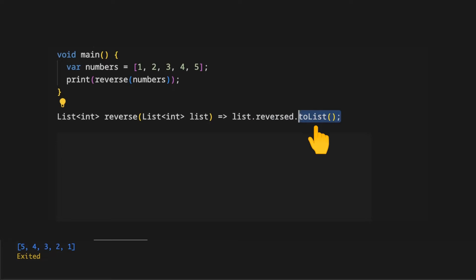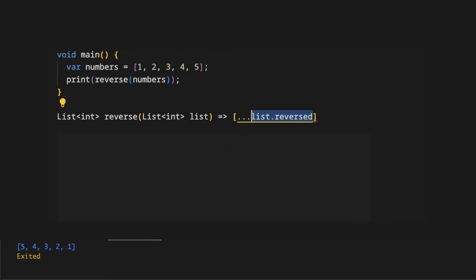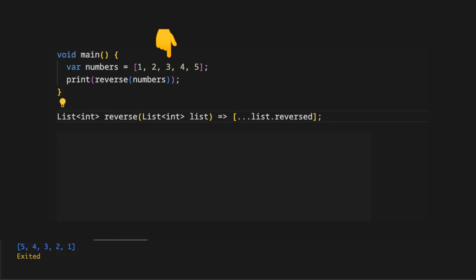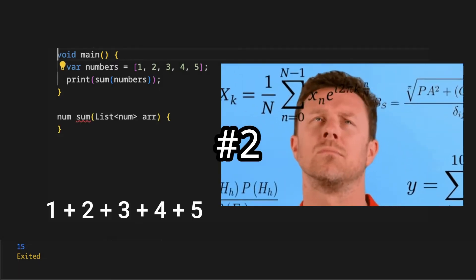Another approach is using the same arrow function and using the spread operator inside the list, represented by square brackets, to transform a reversed collection into a list. On the debug console we see the initial array in reverse order.